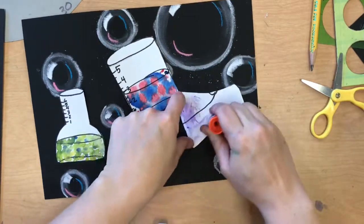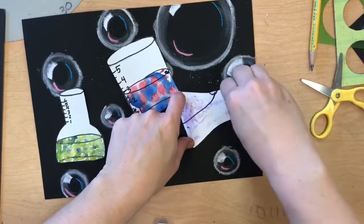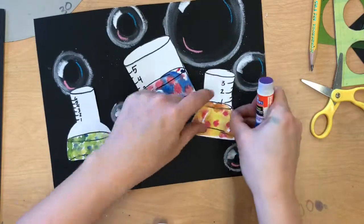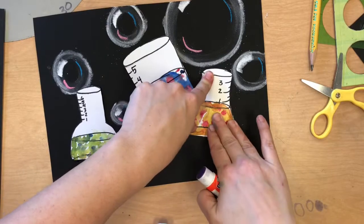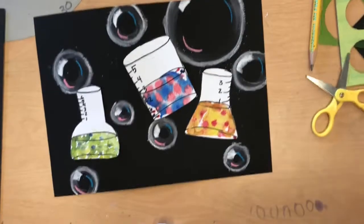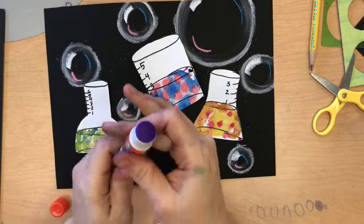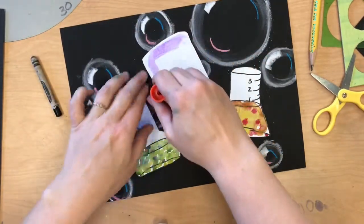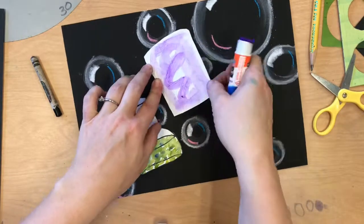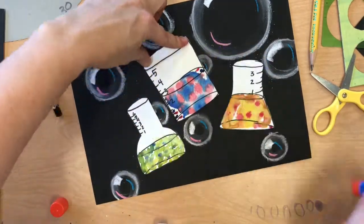I'm using a glue stick to really slather up the back of my beaker because it's on thick paper, making sure to get the edges. And then I'm using my patience to make sure that it sticks down onto the background. You're going to glue stick each of your three beakers and adhere them to your background.